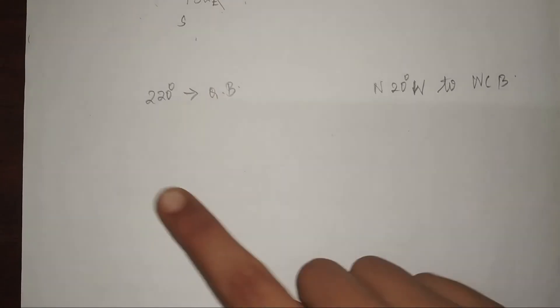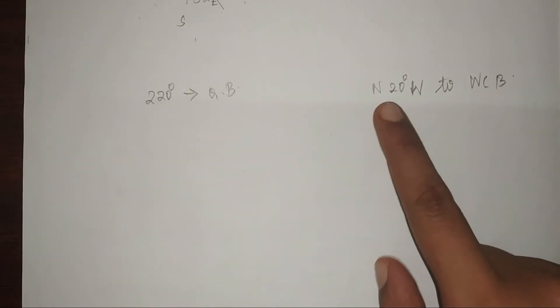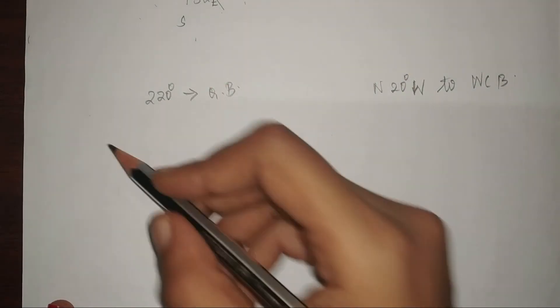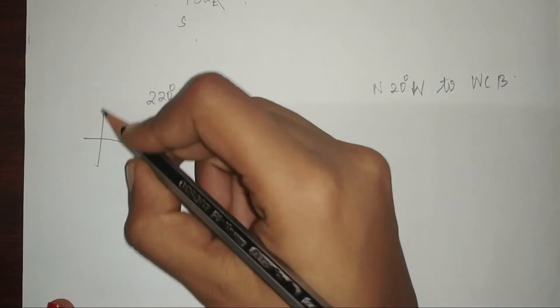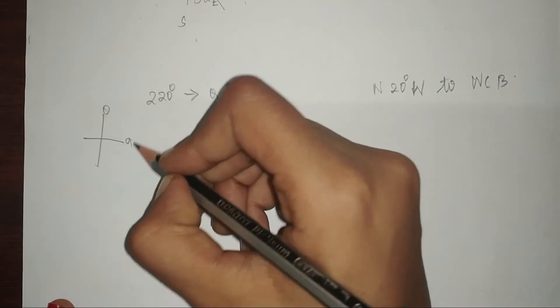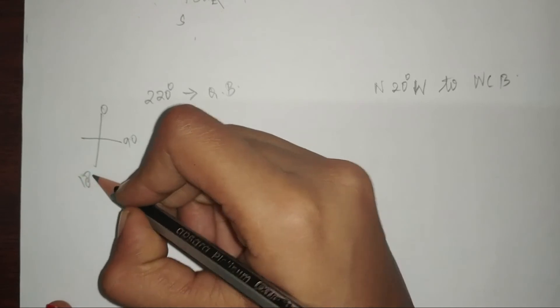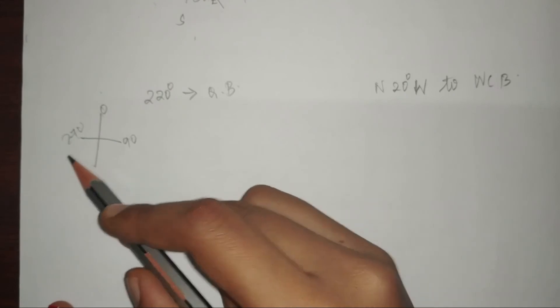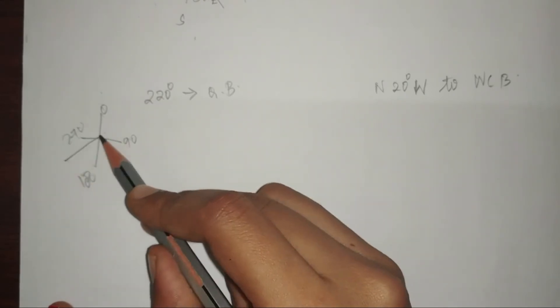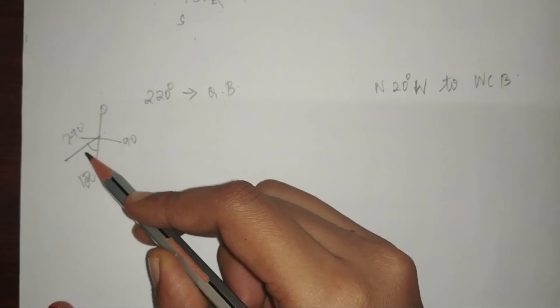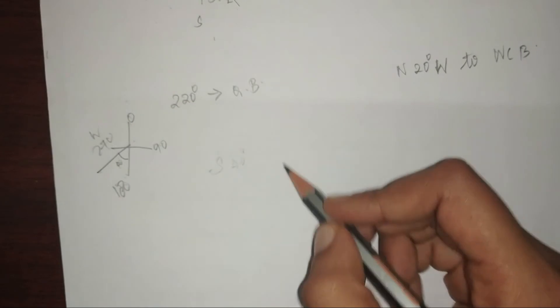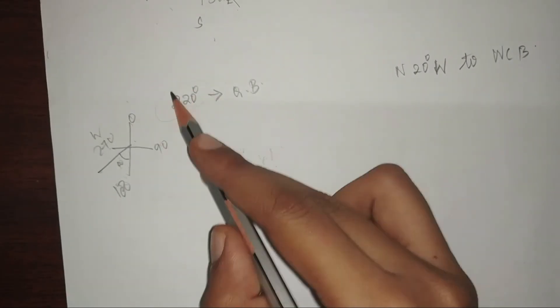Coming to the first problem: 220 degrees as quadrantal bearing. Place 220 on the circle — 0, 90, 180, 270, 360. 220 is 180 plus 40 degrees, so it falls in the third quadrant. The angle from south towards west is 40 degrees, so 220 degrees in quadrantal bearing is South 40 degrees West.